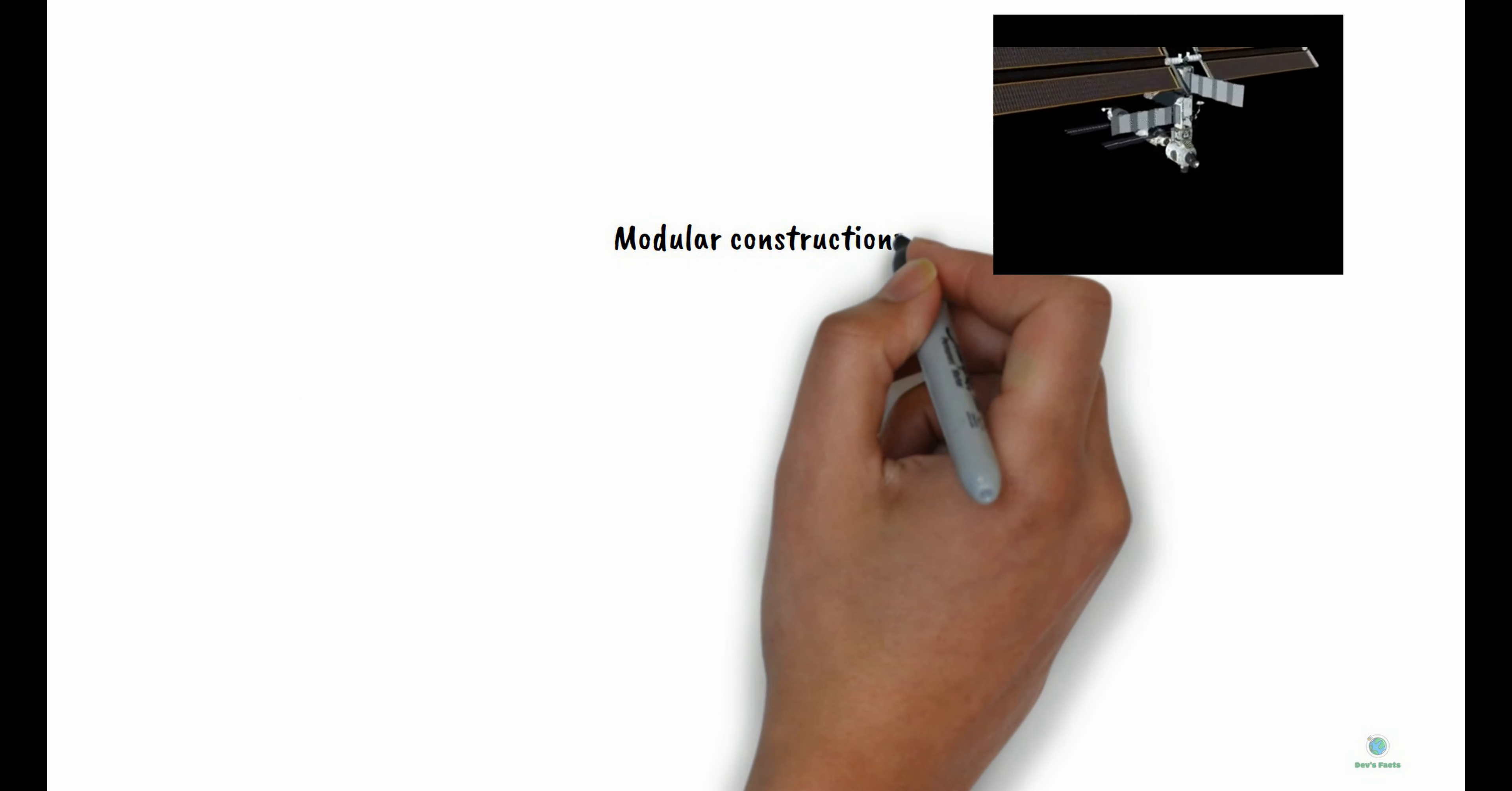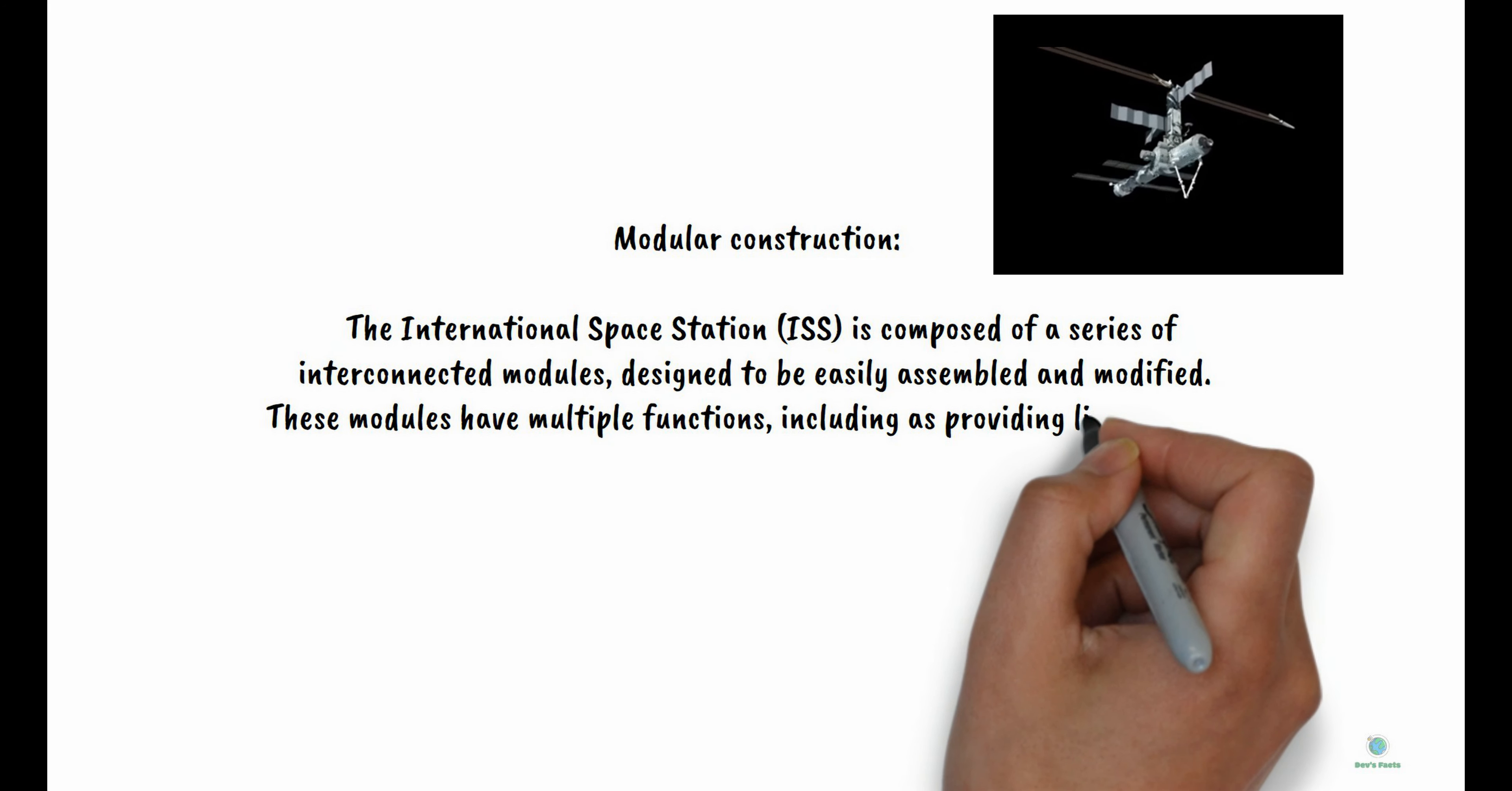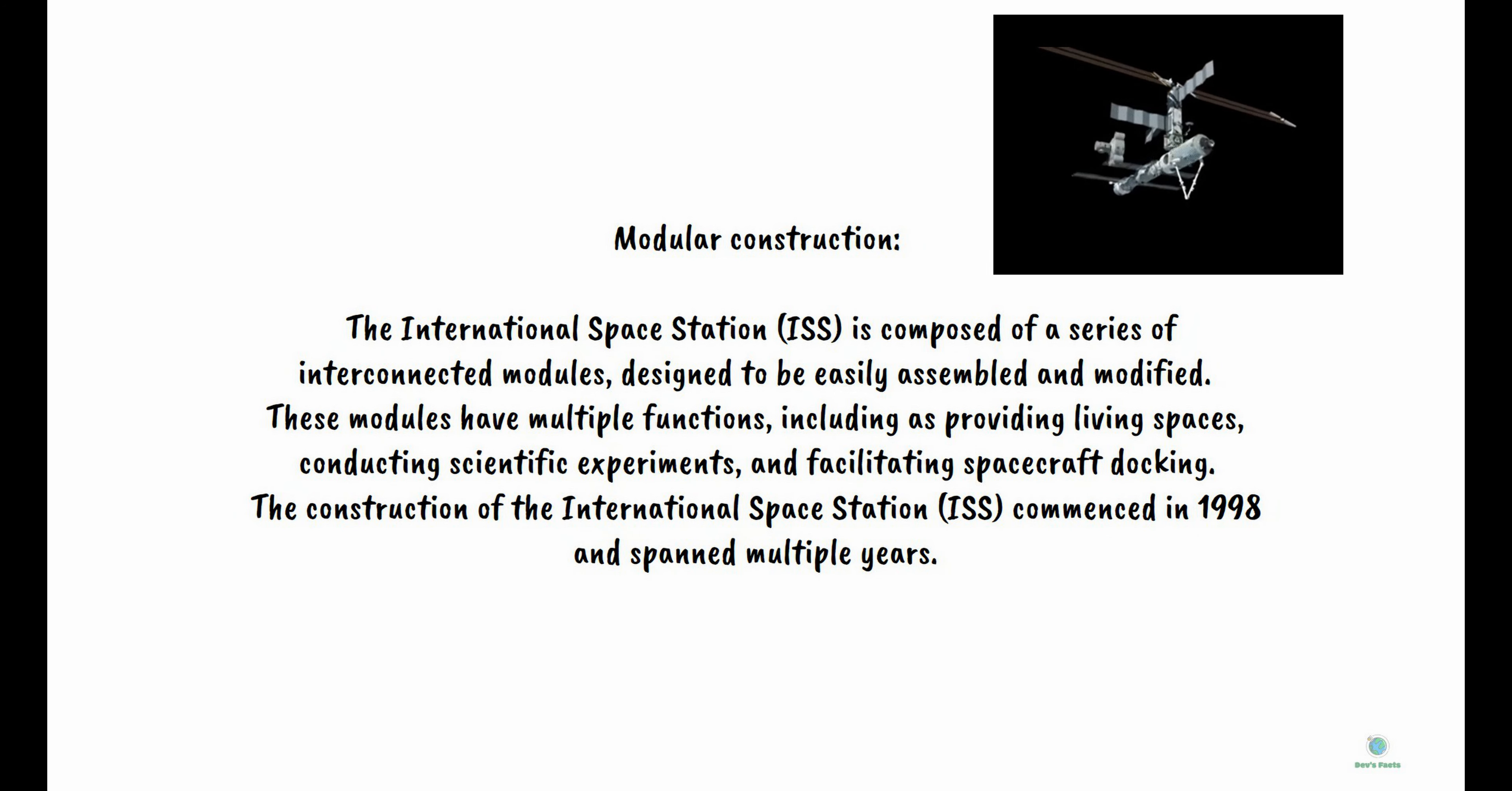Modular Construction: The International Space Station is composed of interconnected modules designed to be easily assembled and modified. These modules provide living spaces, conduct scientific experiments, and facilitate spacecraft docking. Construction commenced in 1998 and spanned multiple years.